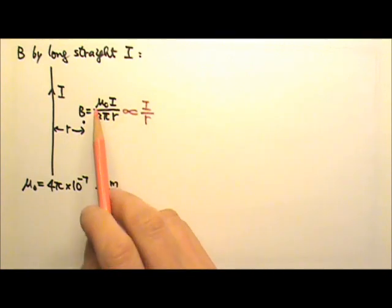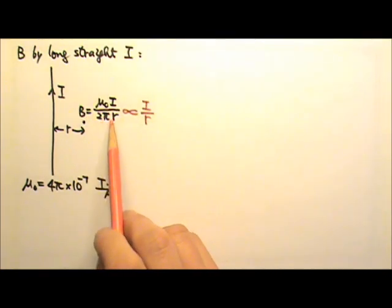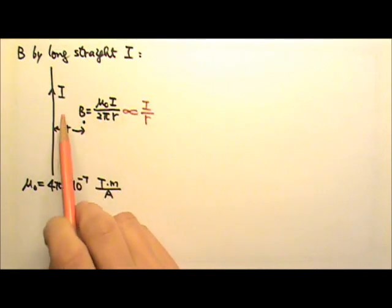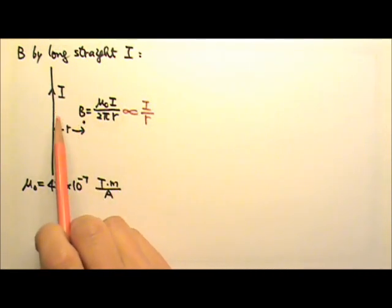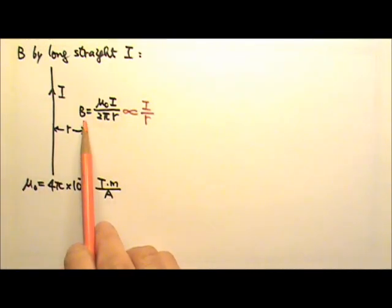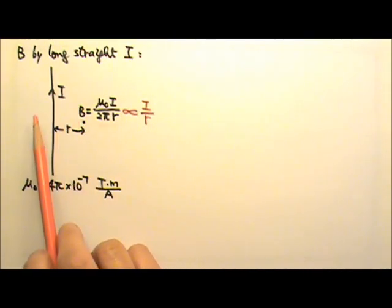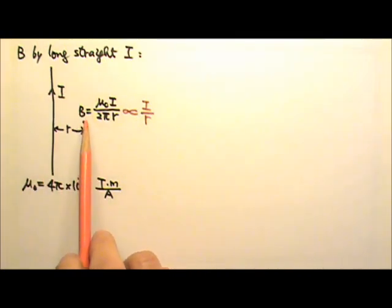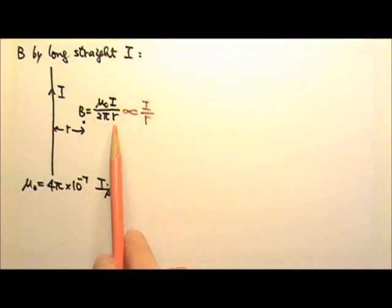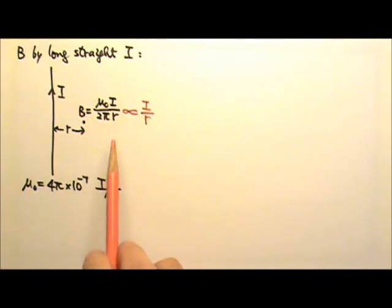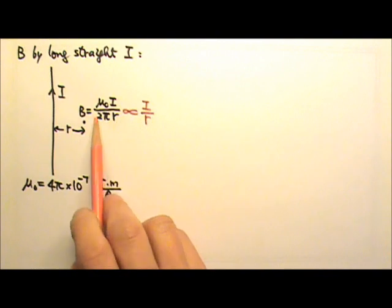It makes sense for the magnetic field to be mu nought I divided by 2 pi r, because the magnetic field lines produced by a long straight current are circles around the current. So when we're closer to the current, the magnetic strength is spread out onto a small circle. When it's farther away, it's spread out onto a bigger circle, and the circumference of a circle is 2 pi r.